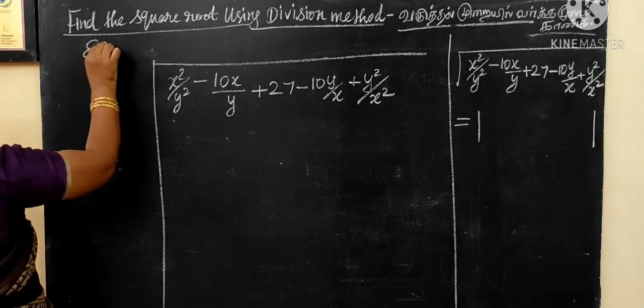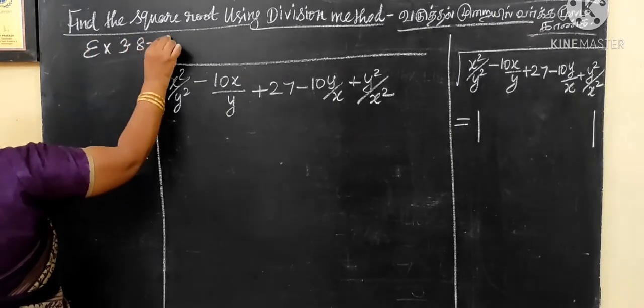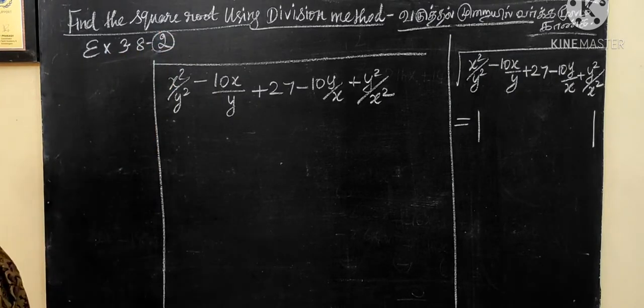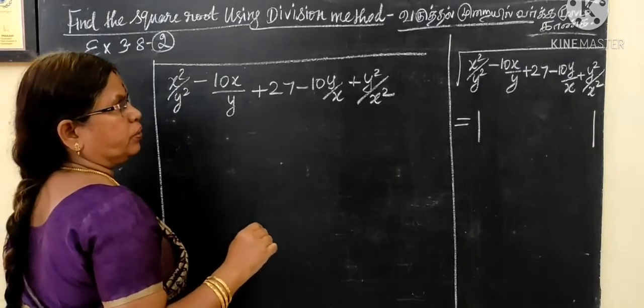That is in exercise 3.8, question number 2. Find the square root using division method.